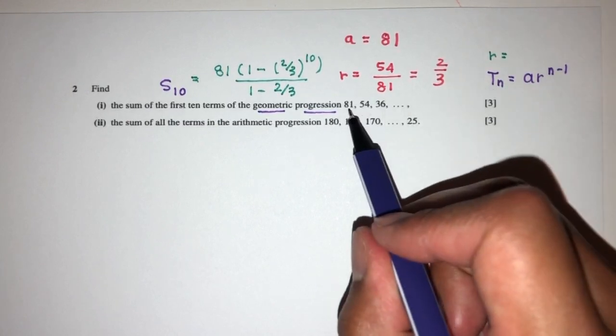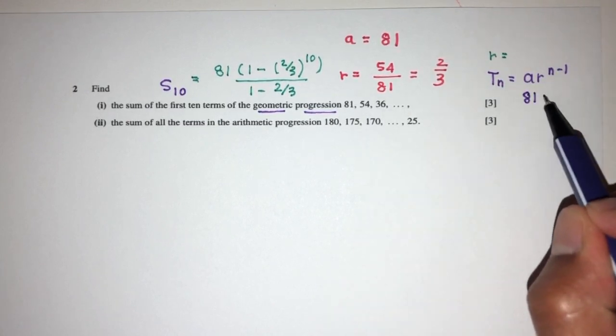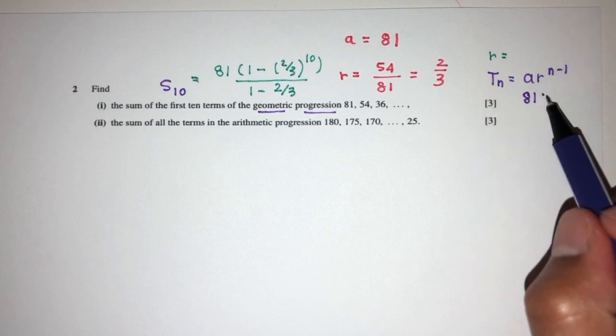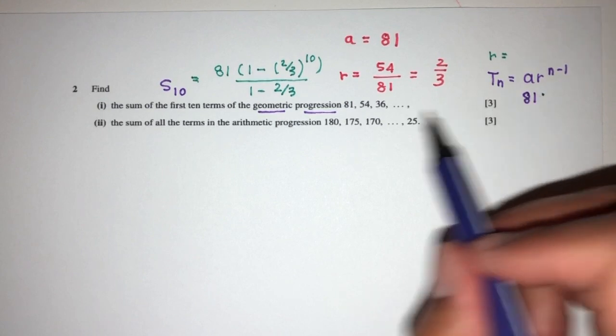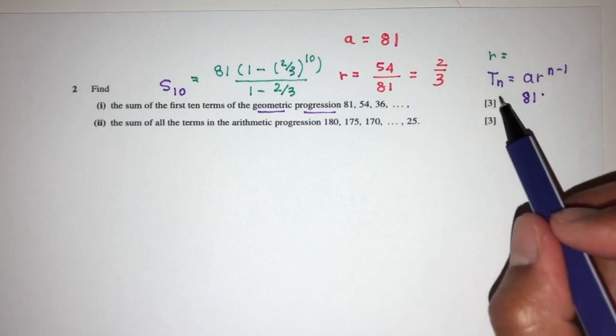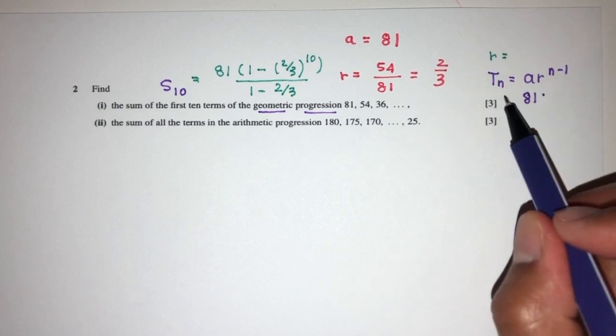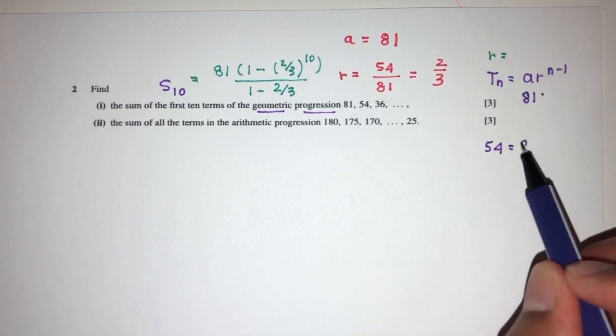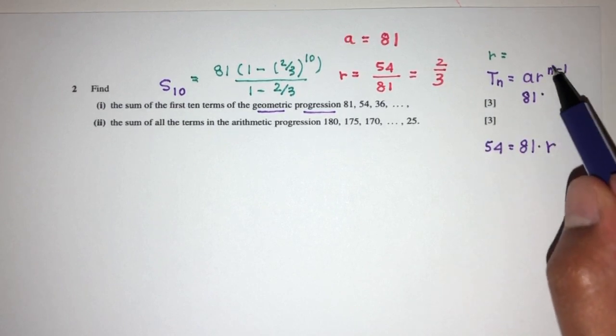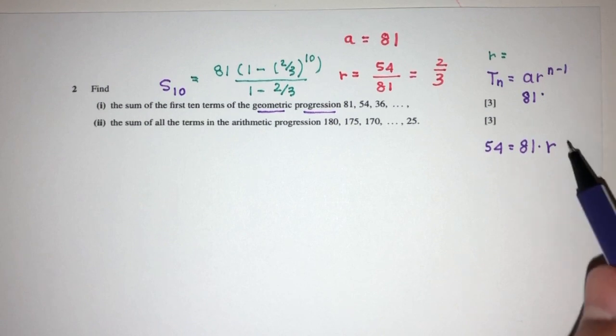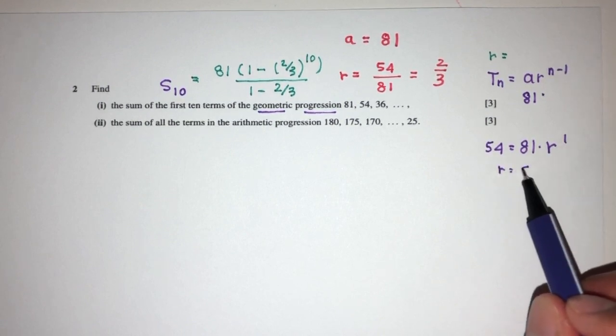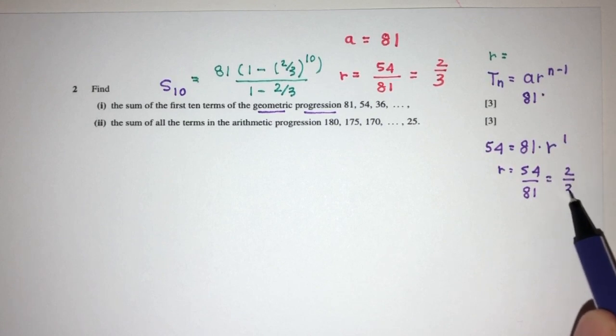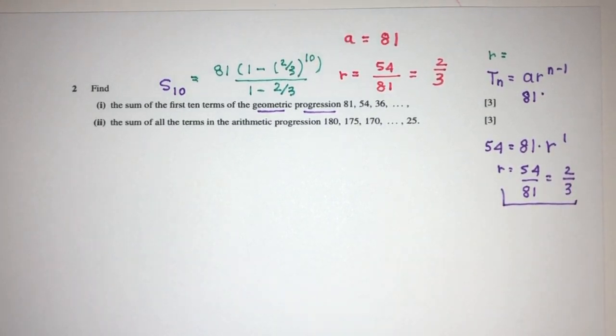We know the first term is equal to 81, so that would be 81. Here we have R, and then we can find, the second term is 54, so we can write 54 is the second term equal to 81 times R, N is 2, second term is 2, minus 1 is 1. So R will be 54 divided by 81, which is going to give you 2 over 3 as well. So again, two methods of finding the value of R, which is the first thing we need to do in this question.